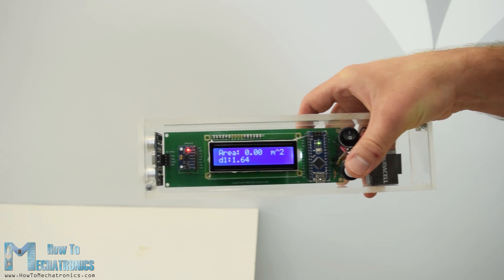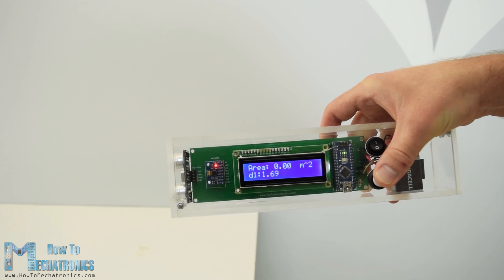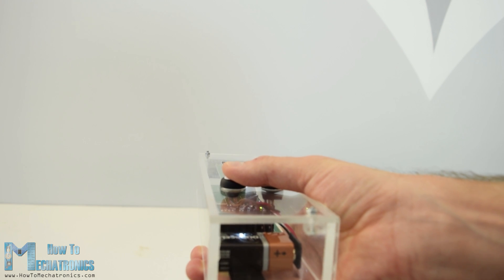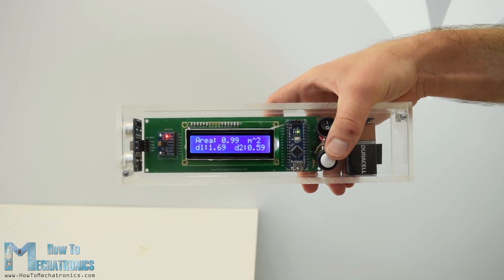For getting into the second program, again we have to press and hold the button for a while. In this program we can measure a square area by taking two perpendicular distance measurements.